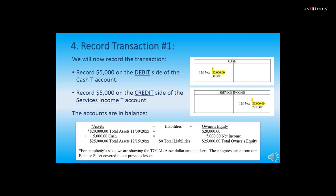Now we're ready for step four, recording transaction one. We record $5,000 on the debit side of the Cash T-Account, remembering to put the date, the amount, and for now a plus sign and the word debit underneath. After that, we record the $5,000 on the credit side of the Service Income T-Account, again with the date, the amount, and the plus sign and the word credit underneath. As you can see by the diagram, the accounts are still in balance. On the next slide, we will talk about the impact of transaction one on our records.